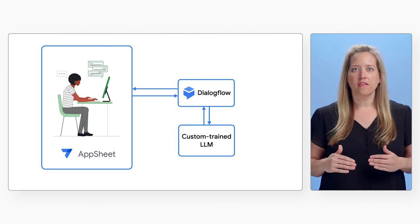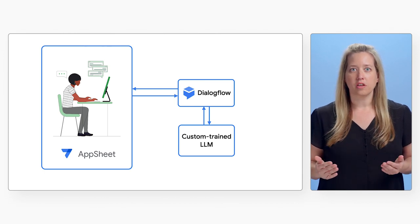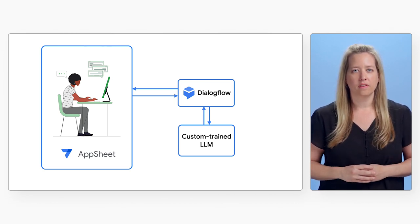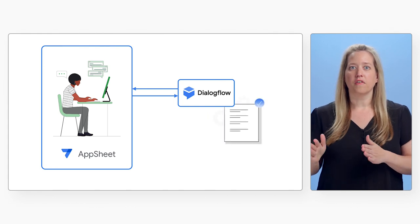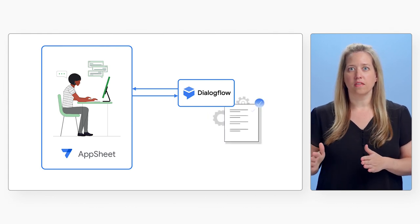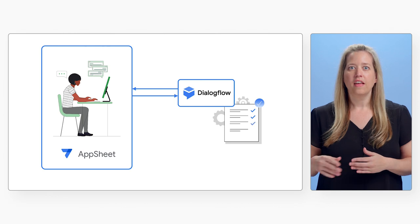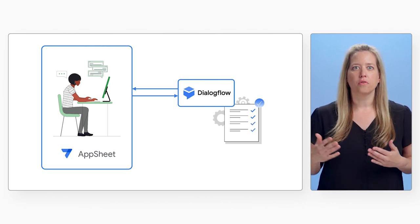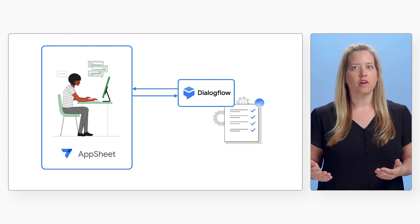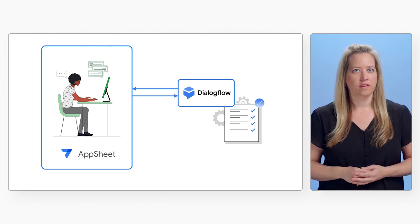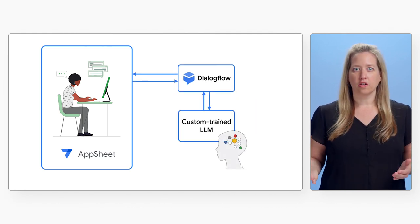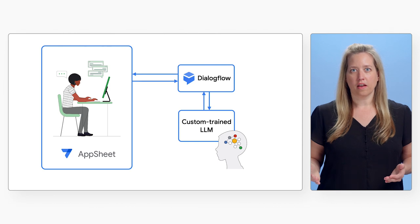Dialogflow and the LLM together supply the information AppSheet needs in order to create the app. Dialogflow quickly collects the foundational pieces of information about the user's business problem that AppSheet knows it will need, so it can build a starter app that will land as close as possible to the user's ideal solution.